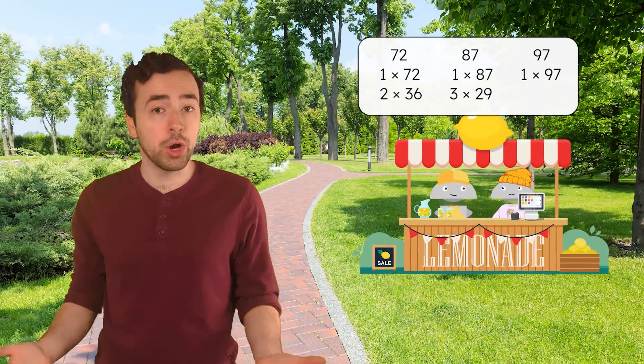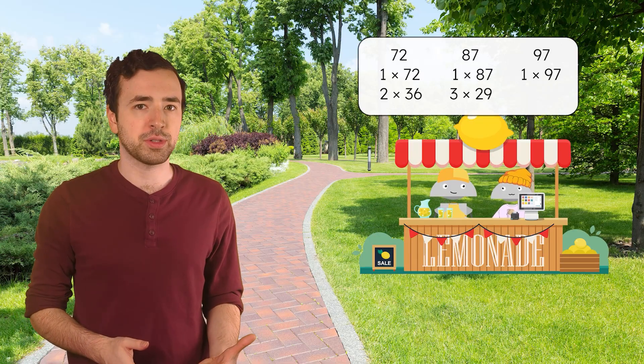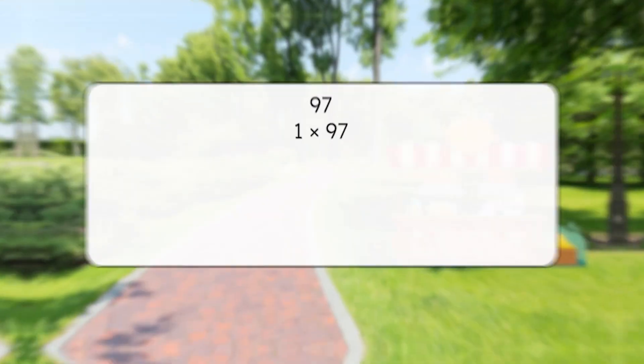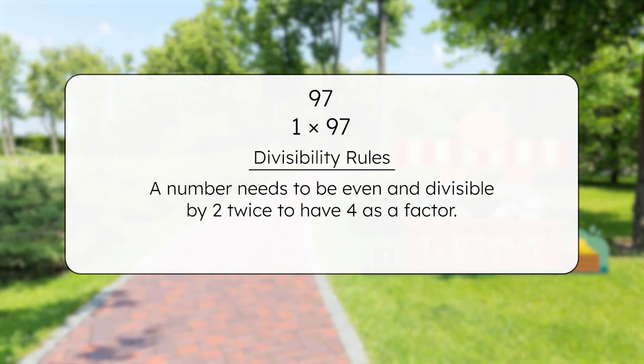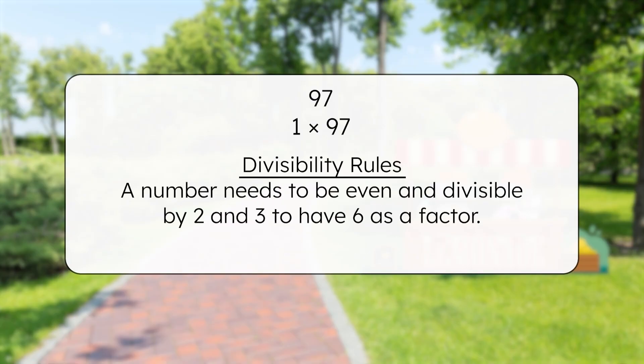So we know 72 and 87 are composite because they have more than two factors. Since we haven't found any other factors of 97, is it prime? Let's check a few more factors to be sure. For a number to have 4 as a factor, it needs to be even and divisible by 2 twice. 97 is odd, so 4 is not a factor. For a number to have 6 as a factor, it needs to be divisible by both 2 and 3. We already know 97 isn't divisible by either, so 6 can't be a factor.